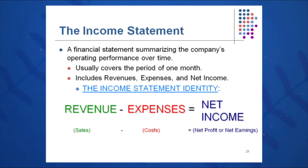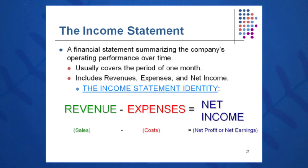The general equation for the income statement is: revenue minus expenses equals net income. Revenues are sometimes known as sales, and they sit at the top line of the income statement. Expenses or costs are in the middle, and net income is what's left over at the very bottom when you take costs away from sales.